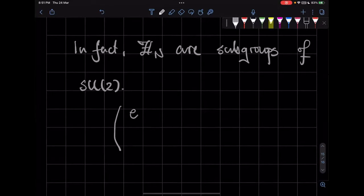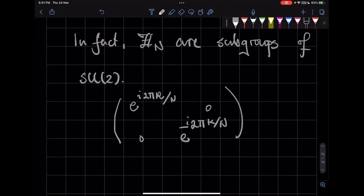So these are essentially matrices which are of the form e^(i·2π·k/n) and e^(-i·2π·k/n), and all these elements they form a group and they are essentially for discrete k's. So k goes from 0 to n minus 1. So these generate the Zn groups, right?